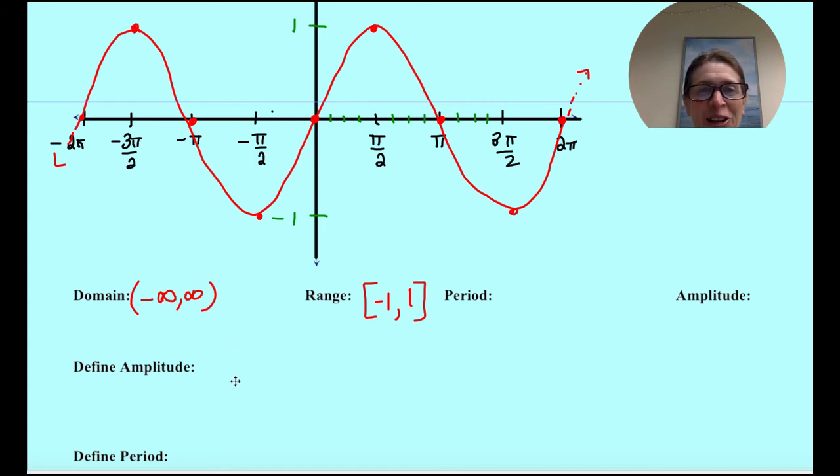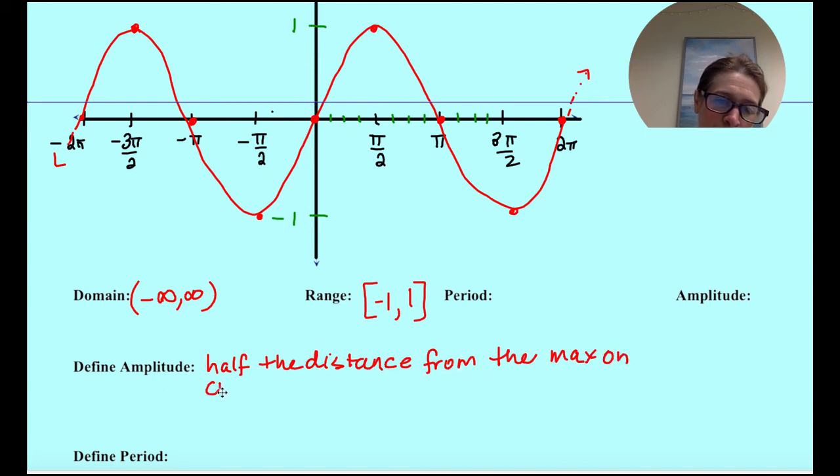So amplitude, if you look it up, it says the definition is the max extent of a vibration or oscillating measure from the equilibrium. That's just a crazy definition. So really your amplitude is half the distance, half the distance from the max on the curve to the min on the curve or the wave. So you can see the max here is 1, the min here is negative 1, that distance is 2, half of that is 1, so this has an amplitude of 1.